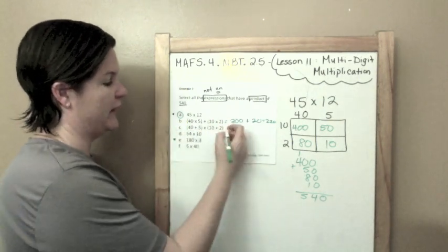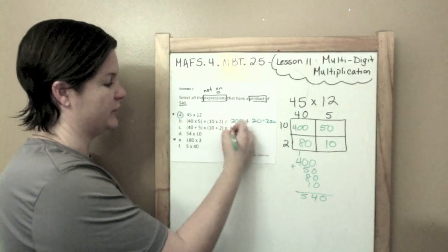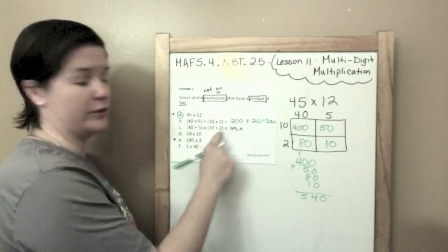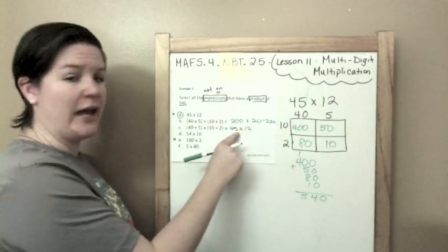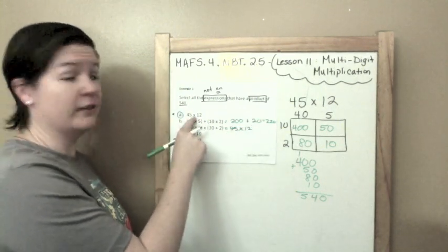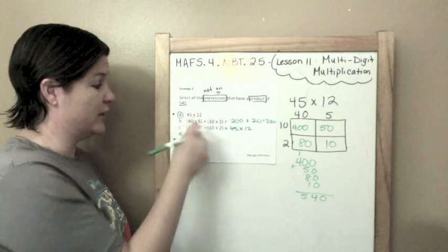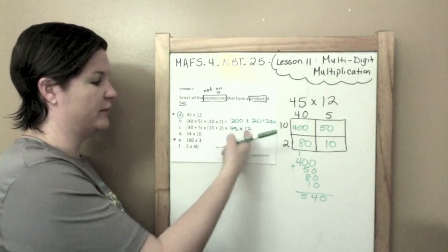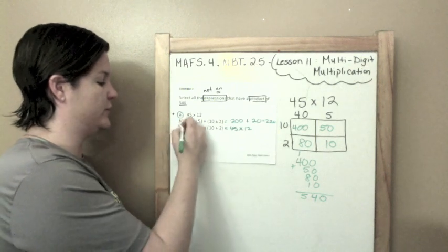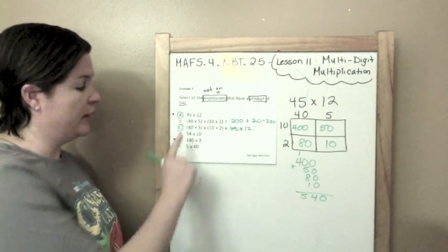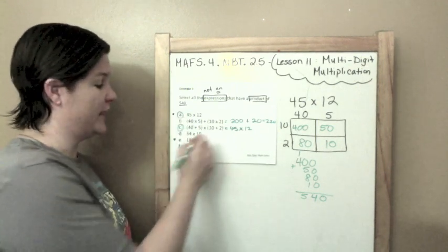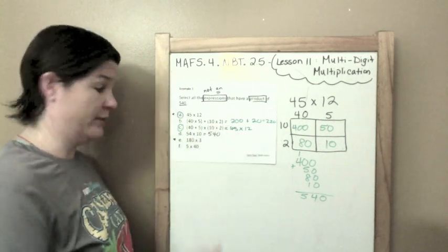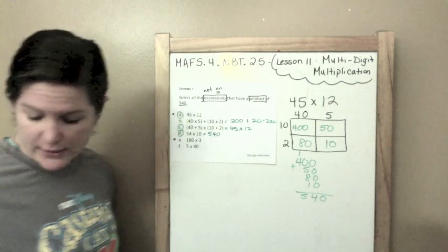Now let's try this one. 40 plus 5, you solve what's in parentheses first, just like I did up here with B. Times 10 plus 2 is 12. Well, hey, that looks a lot like this. It looks exactly like this. We just took it and we expanded it out for C. So we know that if we were to solve this out, we would get 540. So C is an answer. 54 times 10 would be 54 with a 0. That's what we need. So D is an answer.